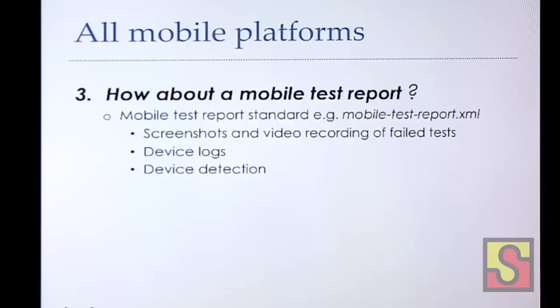What I really liked about JUnit is it's decoupled from your test execution — that XML file can be used by different test tools. As long as you display it in the JUnit XML report schema, you can see the same reporting style. What I'd like to see is a mobile test reporting style that enhances a JUnit report or introduces a new report that includes screenshots, device logs, and device information.